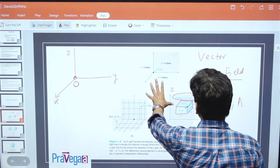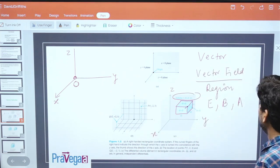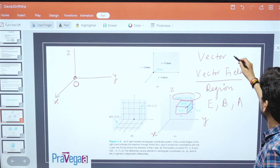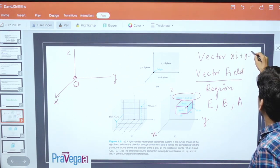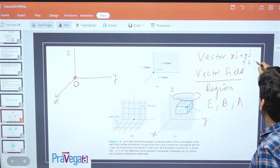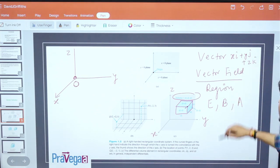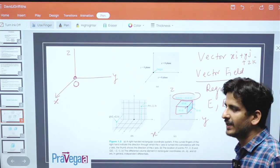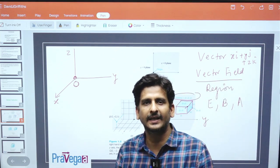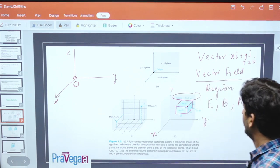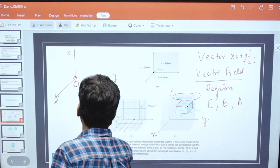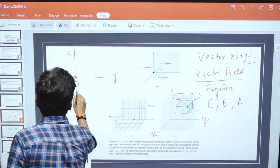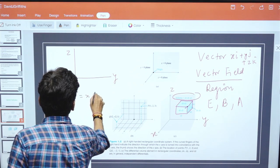This is Cartesian coordinate system x, y, z. The vector is written using unit vectors x i-cap plus y j-cap plus z k-cap, and then vector field will be written using all three coordinates x, y, z.